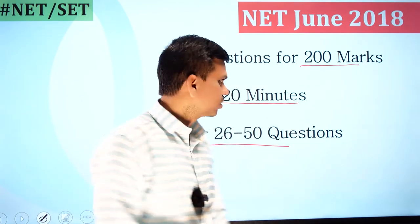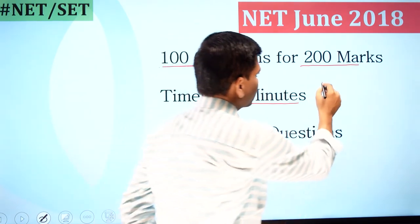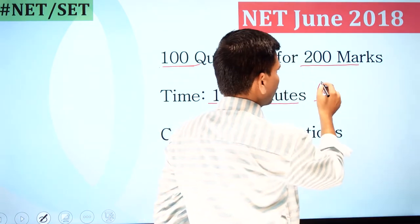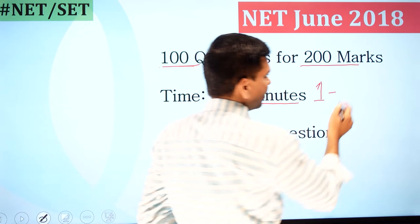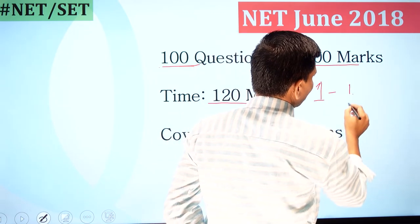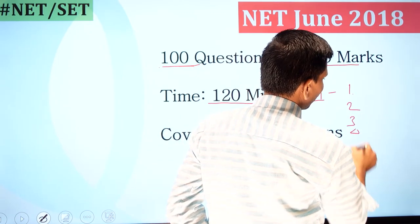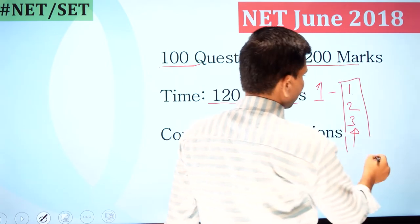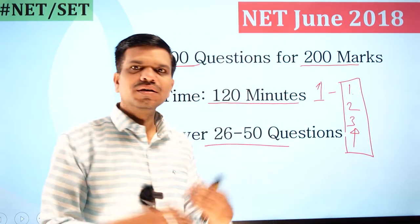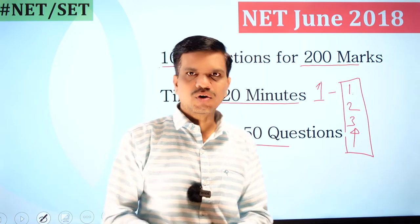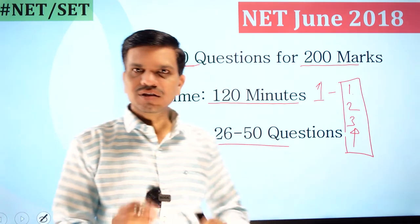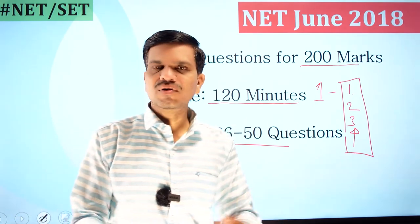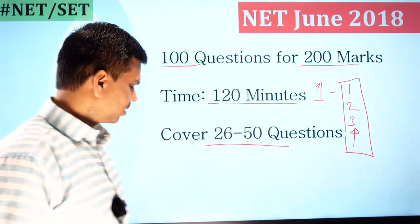Dear students, first let me suggest that you check your knowledge of this previous question paper. Take a pen and paper and write down the question number and the answer you think is correct — options one, two, three, or four. I will immediately tell you the correct option and then you can check your score. There are 25 questions, which are for 50 marks.